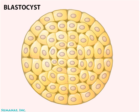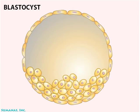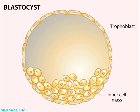If you could look inside the blastocyst, you'd discover that it's a hollow ball made up of two cell types. An outer layer, called the trophoblast, eventually forms the placenta. An inner cluster of cells, known as the inner cell mass, becomes the embryo.